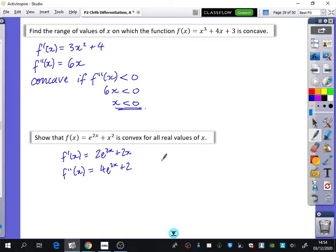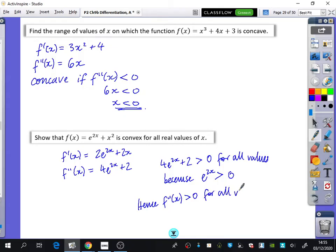You just get 4e^(2x) + 2. And we can see here that 4e^(2x) + 2 is greater than zero for all values because what can you say about e^(2x)? It's always above zero because e^(2x) is always greater than zero. Hence, f''(x) is greater than zero for all values, so it's convex.